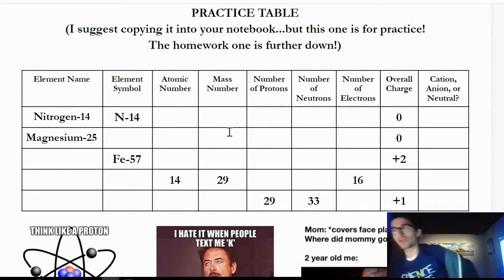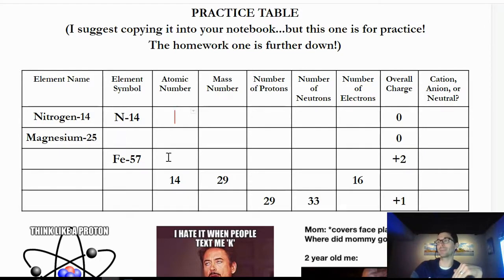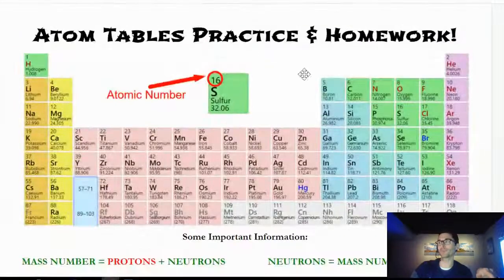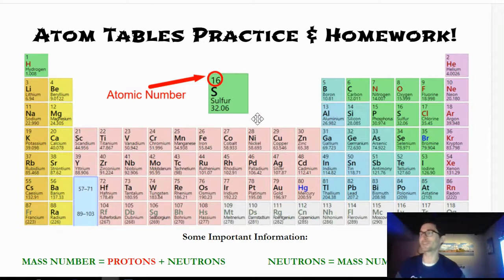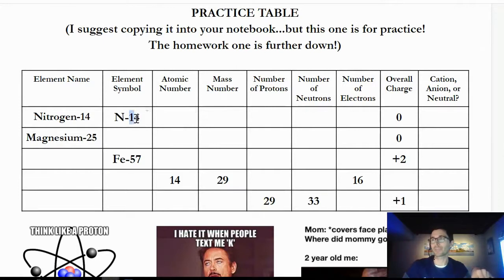For the practice table, we're trying to fill in all the blanks given the information we know. I'm going to do a few rows together with you — the top row and then another one — and then go through the rest quickly so you can see the final answers. Make sure you have your periodic table available. So let's start: Nitrogen-14.